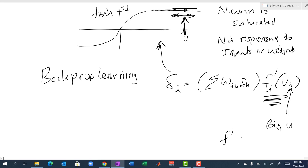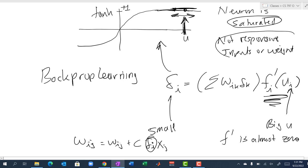Look at the slope. The slope is very small or zero. So f prime is almost zero. That means the error delta is going to be zero or really small, and then the weight update is not going to happen because it depends upon that error delta, which for this case is small. So if the neuron is saturated, it's not responsive to the inputs or the weights, and learning can't happen.